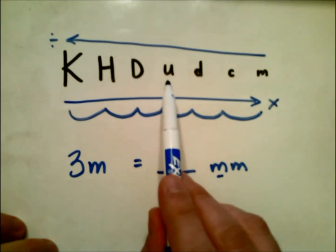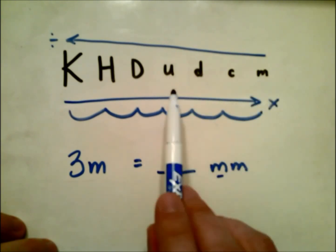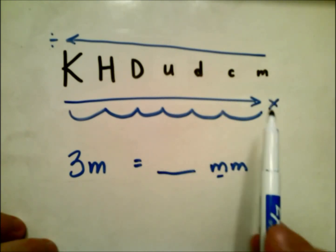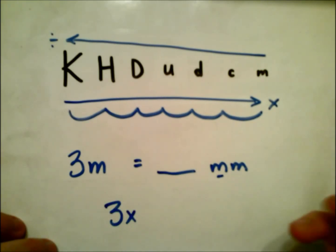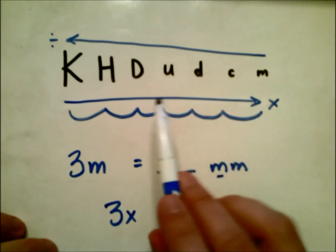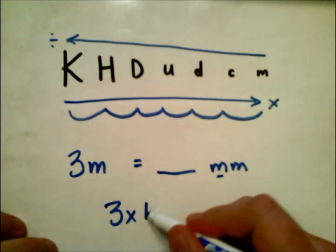The meter is the base unit. So if we start at the base unit, how many jumps is it going to—well, first, which direction are we going to be going to get to meters? We're going to be jumping to the right. So if we look at our arrow, we're going to be multiplying. So we're going to multiply three times—well, how many millimeters are in one meter? Well, I know that there are 1000.